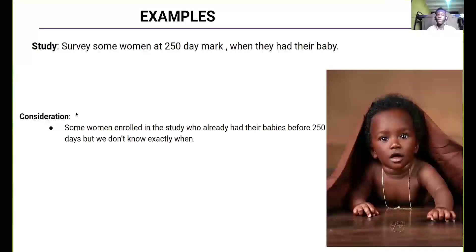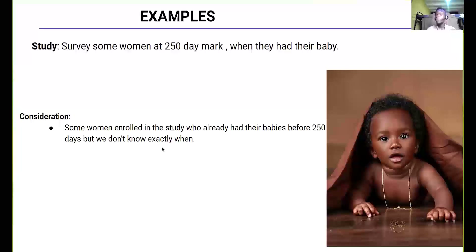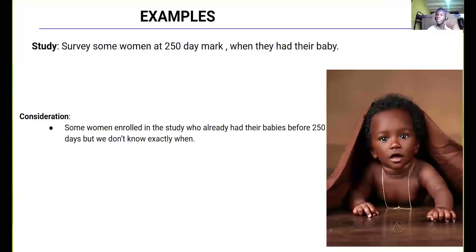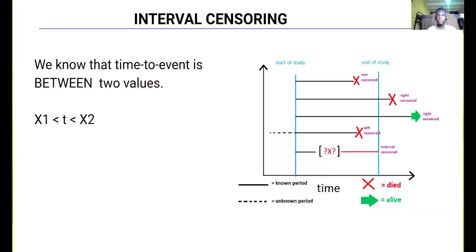Here is another example of left censoring: a survey of some women at the 250-day mark for when they had their baby. Some women enrolled in the study who had already given birth before the 250-day mark, but we don't know the exact time. So we are surveying women at the 250-day mark for birth, but some people enrolled after giving birth already, and we don't know the exact time. This is an example of left censoring.